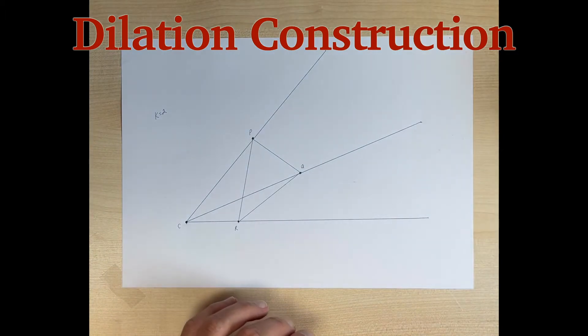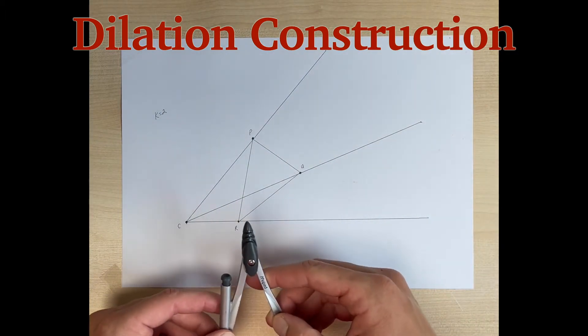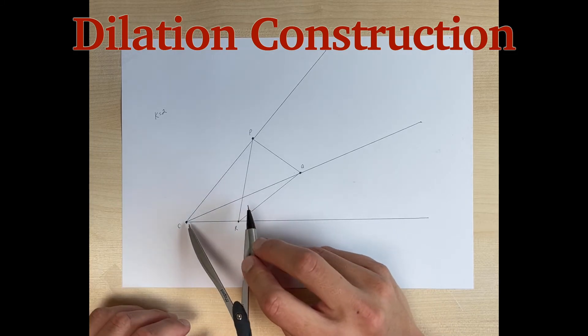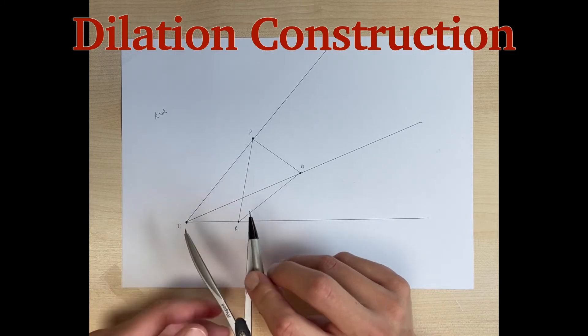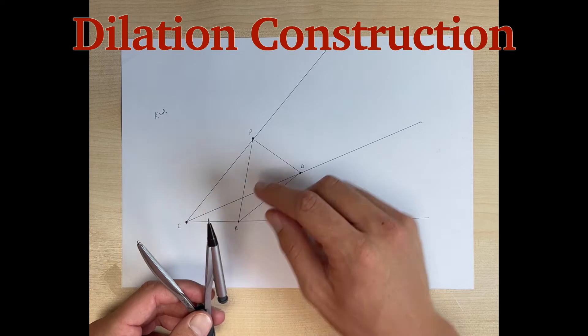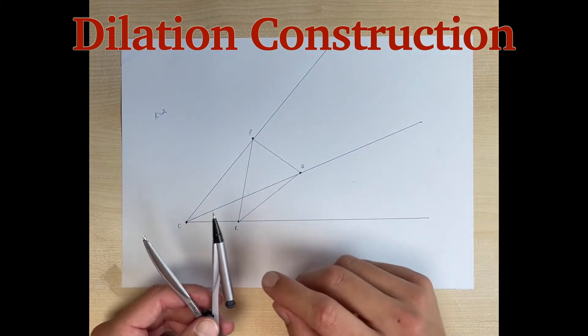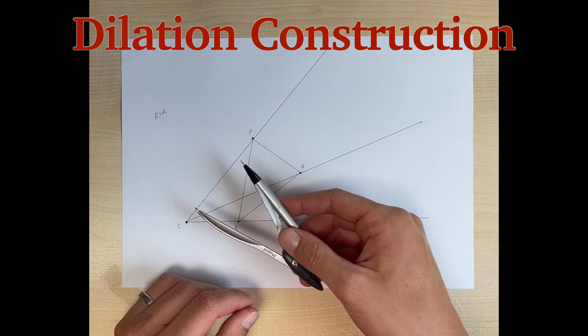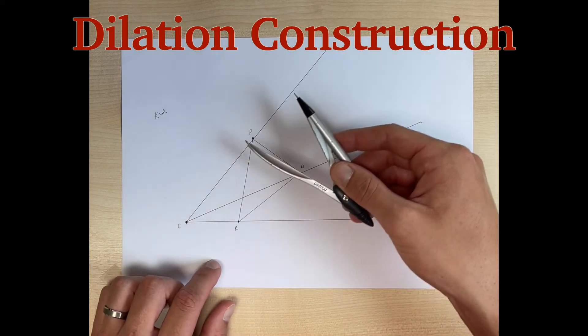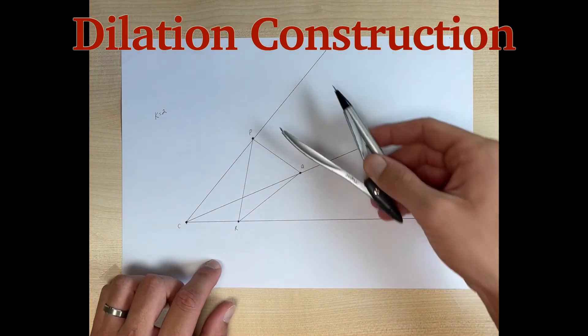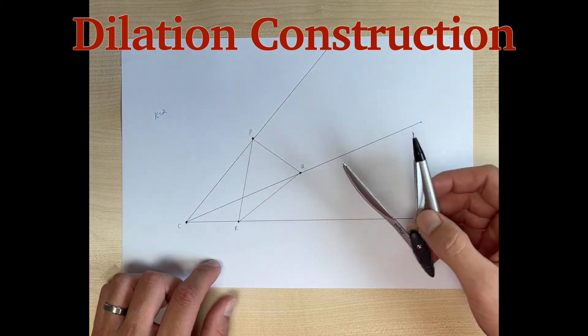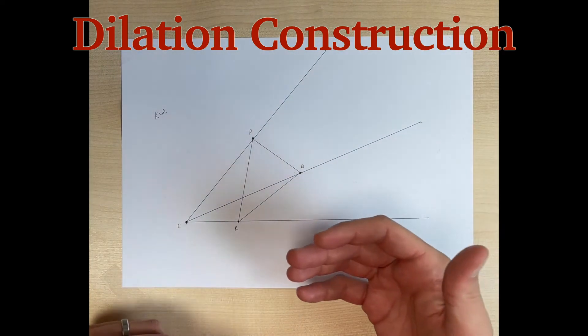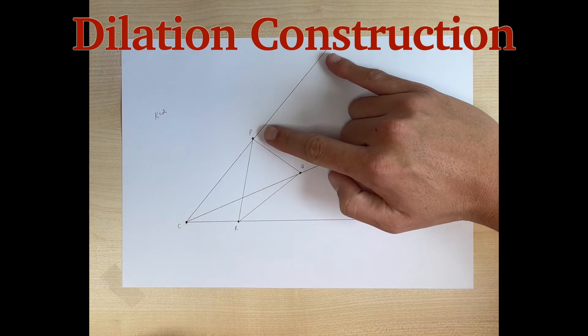Now we have our rays drawn there. We're going to take our compass and put the needle at point C, our center of dilation, and then put the pencil end on each of our vertices to measure that distance. Then we're going to take that distance and shift our needle to the vertex and draw a little arc out on our ray, which would essentially act as twice the distance.